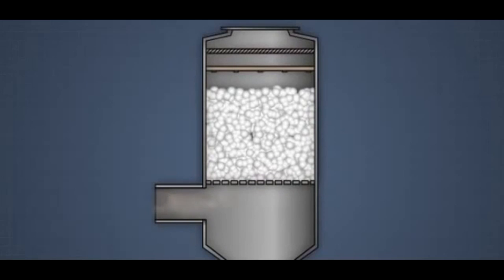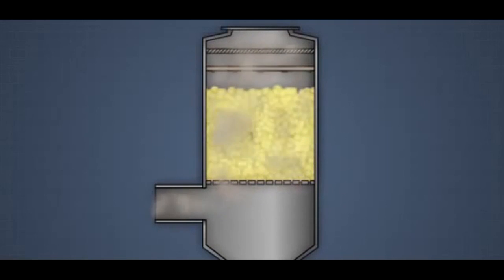The contaminated gas stream is fed into the tower. Inside the tower is a bed of special packing material. Nozzles spray scrubbing liquid on top of the packing material and the liquid works its way down the tower.